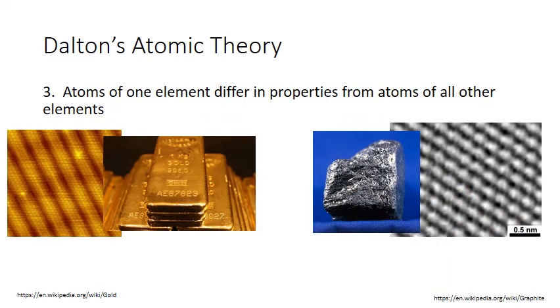The third part of Dalton's theory is that atoms of one element differ in properties from atoms of all other elements. So consider the differences between the two elements, gold and carbon. One is a malleable metal that can be worked into shapes like these gold bars.